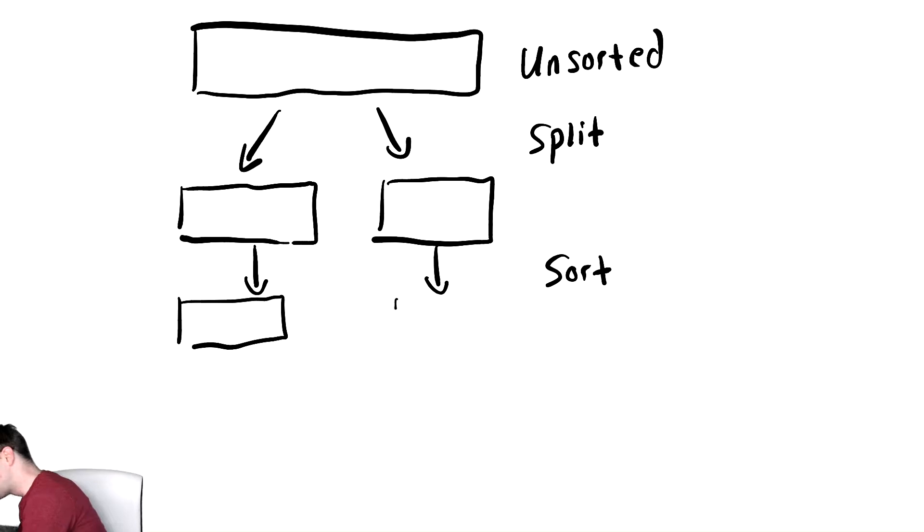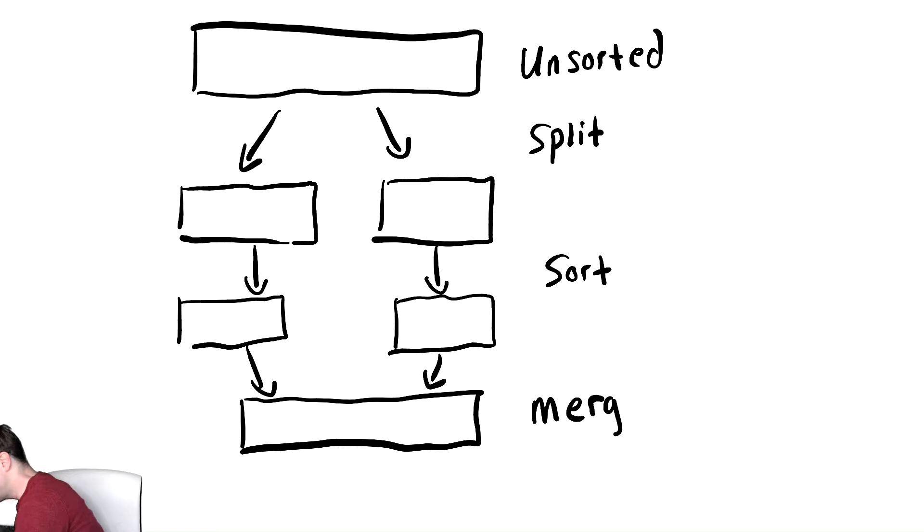You have two fully sorted arrays and now you can merge those things back together, hence the name merge sort, by iterating over both of them at the same time and putting in the correct values. That's the idea - you can sort two things separately and then merge them back together.